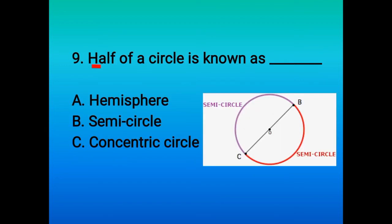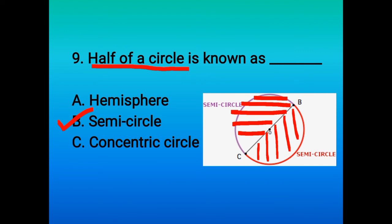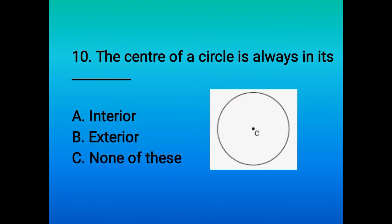Ninth question: half of a circle is known as semicircle. You can see clearly this portion is the half of a circle and it is semicircle. Similarly, this is another half portion and it is called semicircle.